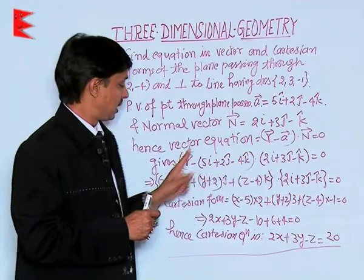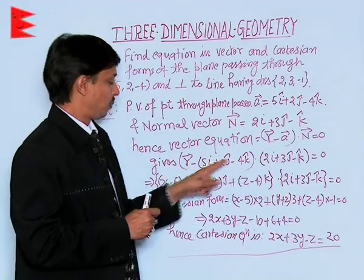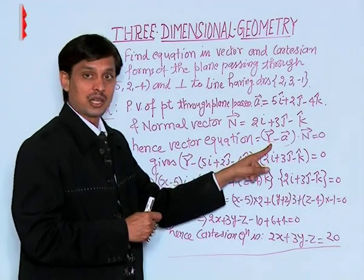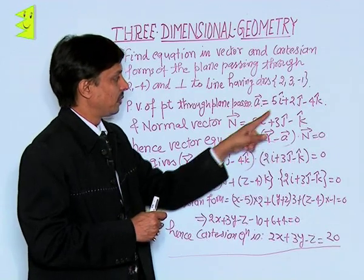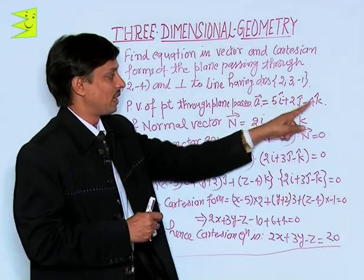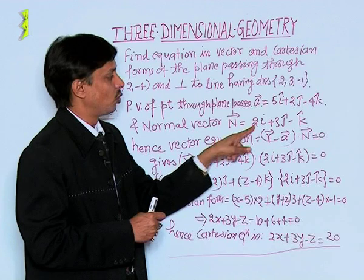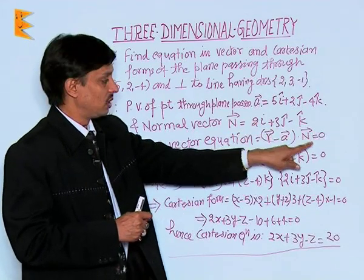So in place of R: xi + yj + zk; in place of A: 5i + 2j - 4k; in place of N: 2i + 3j - k. This equals 0.